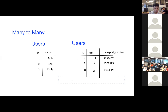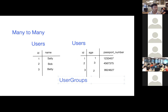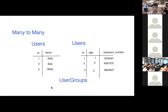In a join table, we'll call it user-users. Another example of a many-to-many would be groups. If you had something like Meetup, you can be a member of many groups, and those same groups can have many users inside. The join table would normally look like this.